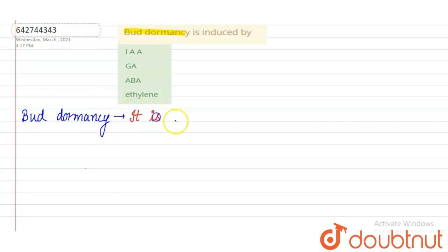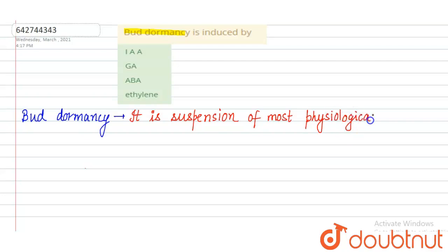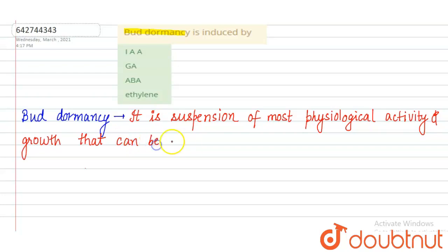Bud dormancy is a suspension of most physiological activity and growth that can be reactivated. Bud dormancy occurs in response to environmental conditions, like seasonal changes, or in cases of extreme heat, drought, or cold. The exit from bud dormancy is marked by the resumed growth of the bud.